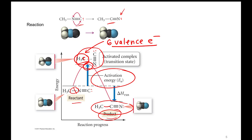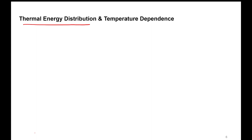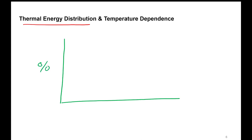Now the next thing to think about is where would a molecule get enough kinetic energy to overcome this activation energy? It turns out that at any given temperature, a molecule could have enough kinetic energy to overcome an activation energy, and that comes from looking at the thermal energy distribution of a given molecule. The thermal energy is related to temperature. Just because a sample of molecules is at a certain temperature doesn't mean that every single one of those molecules has the same kinetic energy. Temperature is really a relative measure of their kinetic energies, and molecules actually have a wide distribution of kinetic energies — that's what we call the thermal energy distribution.